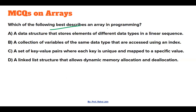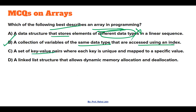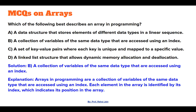The next question asks which of the following best describes an array in programming. A data structure storing elements of different data types — no. A collection of variables of the same data type accessed using an index — correct. A set of key-value pairs — not necessarily unique. A linked list allowing dynamic storage — no, arrays are not dynamic. So option B is the correct answer.